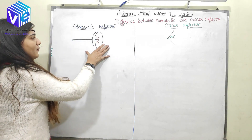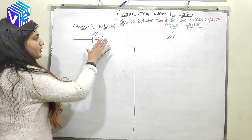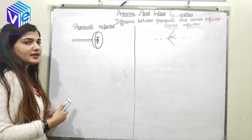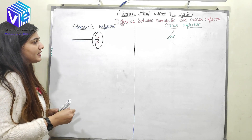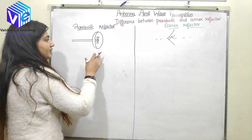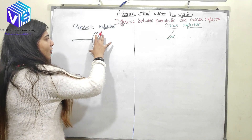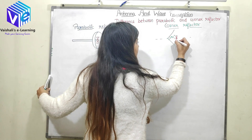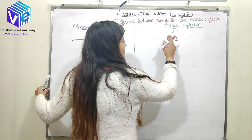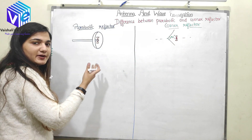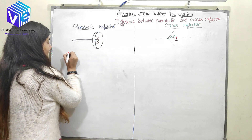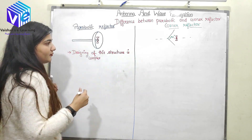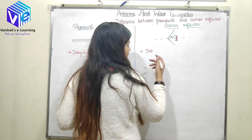The first thing about the parabolic reflector is its designing. You can see from its structure how it is designed, and you can see from the corner reflector how it is designed and make a comparison. The designing of the parabolic reflector must be very difficult because it has various parts — it has a parabolic part, and the red part represents the antenna. The corner reflector has just two parallel planes joined at 90 degrees, so its designing is relatively simpler.